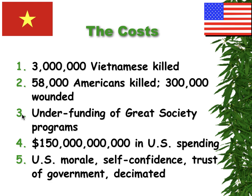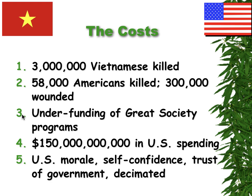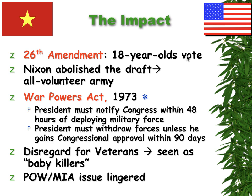I've heard 4 million Vietnamese killed — the teacher has 3 million here. 58,000 Americans were killed, over 300,000 wounded. The Great Society programs were damaged as I told you. The long-term cost of Vietnam is that Americans really lacked confidence in the government, and you're going to see that tremendously in the 1970s. Politically, the 26th Amendment was ratified, allowing 18-year-olds to vote — if you're old enough to fight, you should be able to vote.